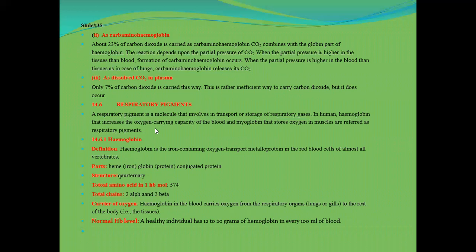Hemoglobin has a heme part and a globin part. It is a conjugated protein. Its structure is quaternary and it has a total of 574 amino acids. The total chain consists of two alpha and two beta subunits. Sometimes an MCQ is framed asking how many amino acids are in hemoglobin — the answer is 574.